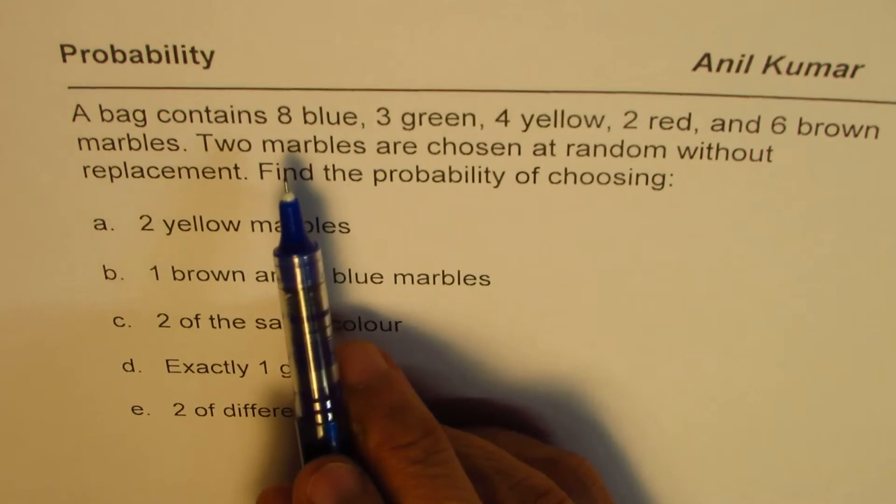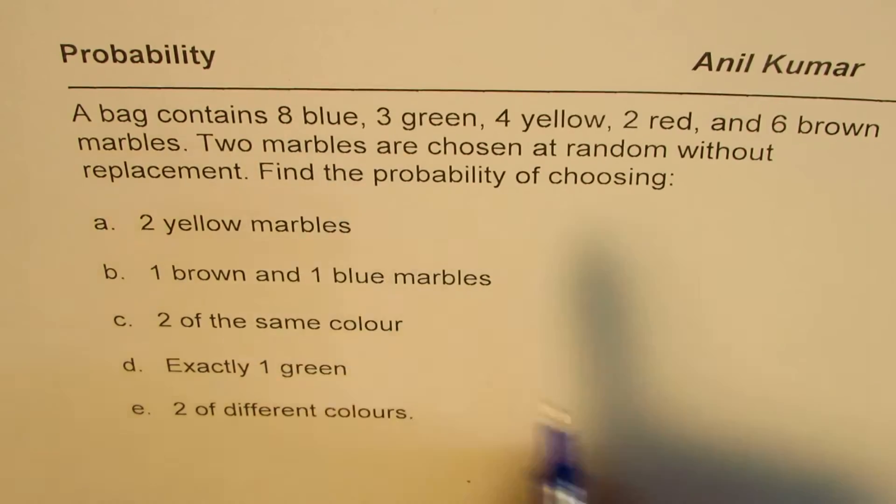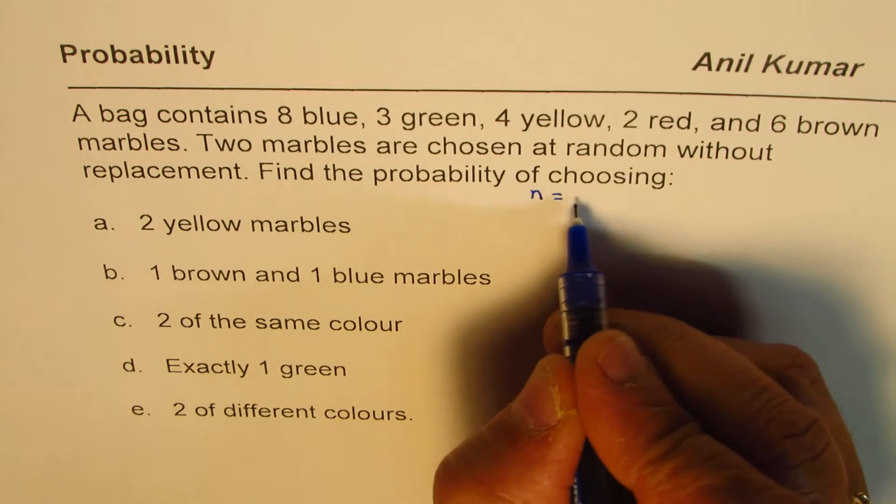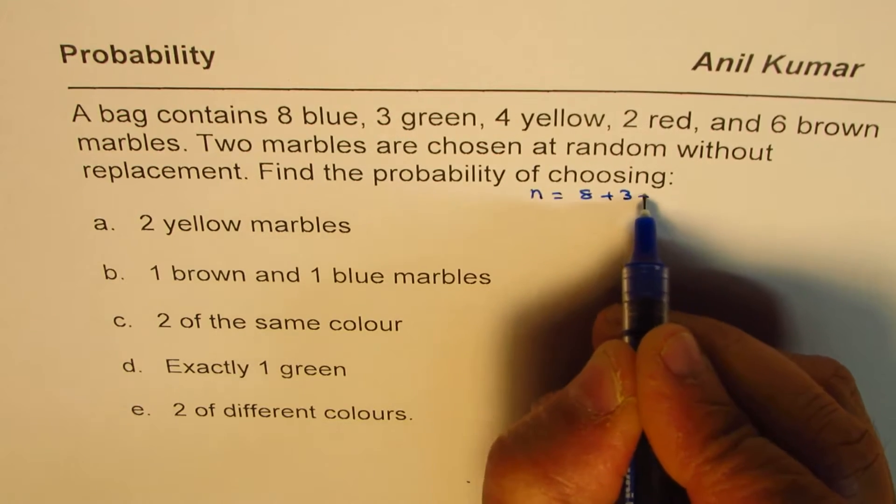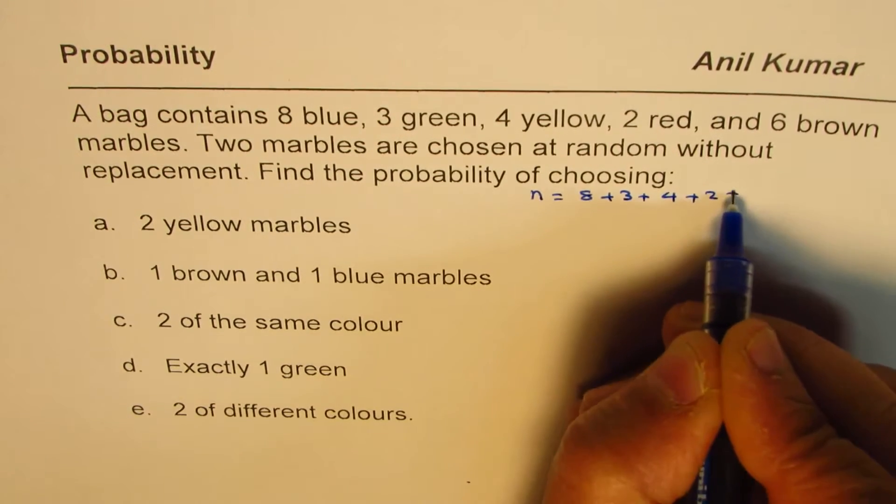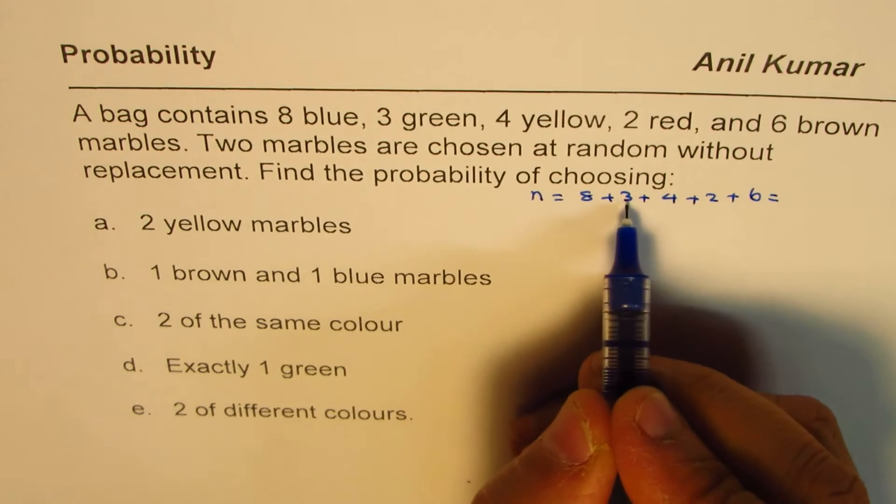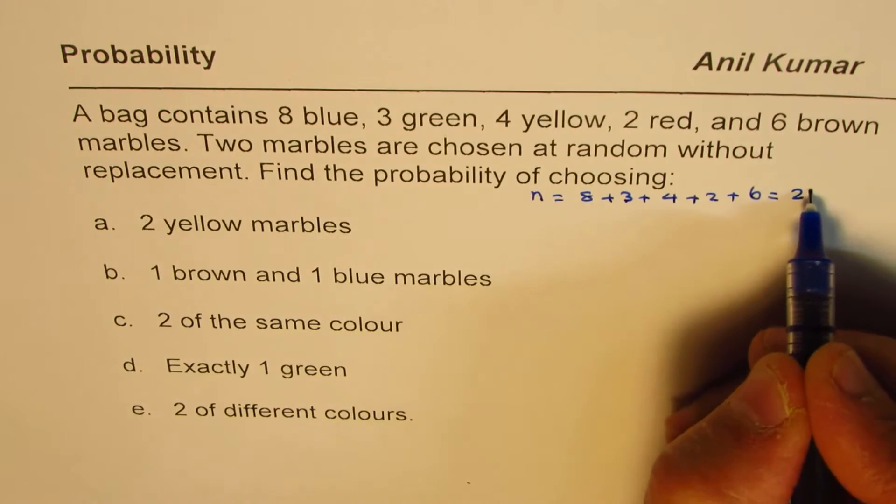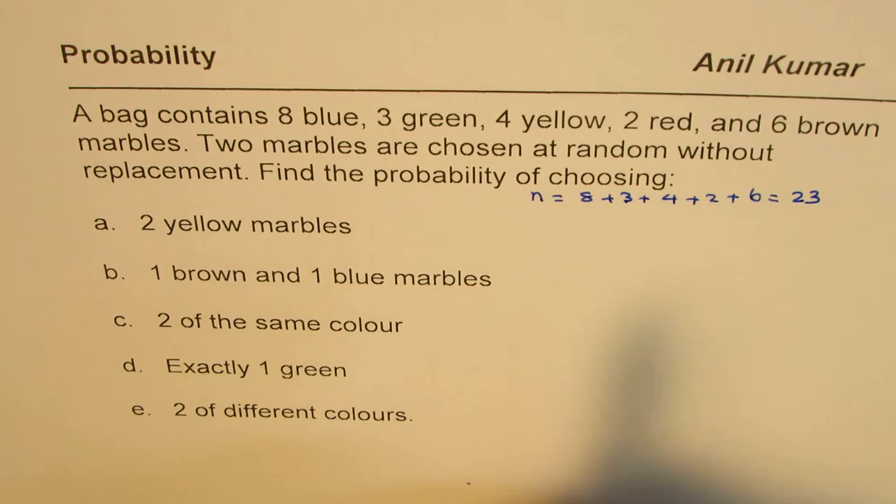Now, how many marbles in all we have? Let's count them first. So total number n, which we are working with, is 8 plus 3 plus 4 plus 2 plus 6. So 11, 15, 16, 17 is 23. So 23 is total number of marbles.